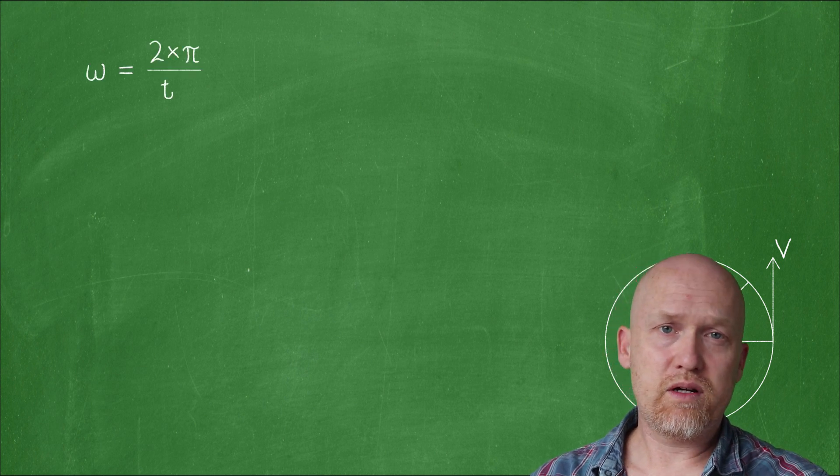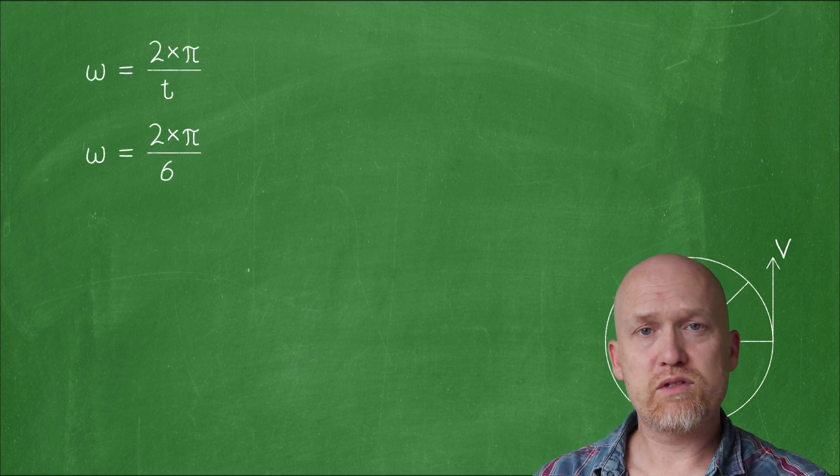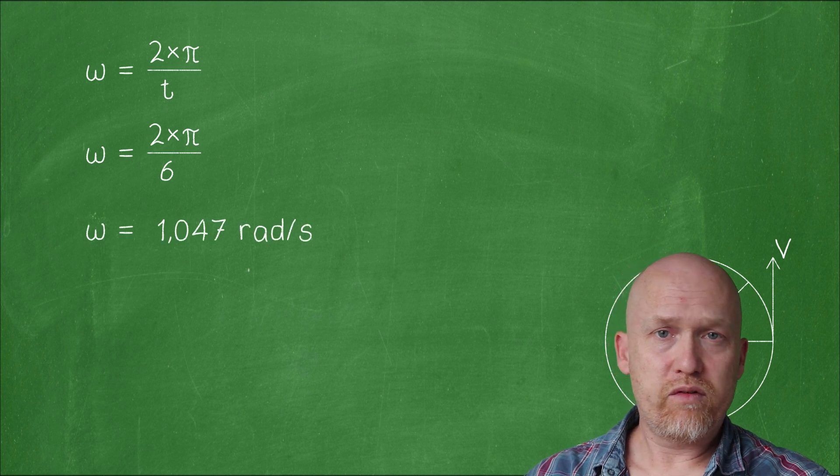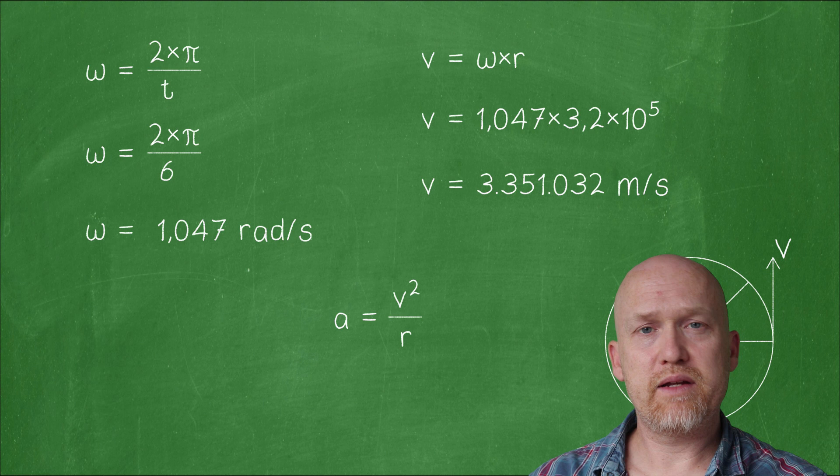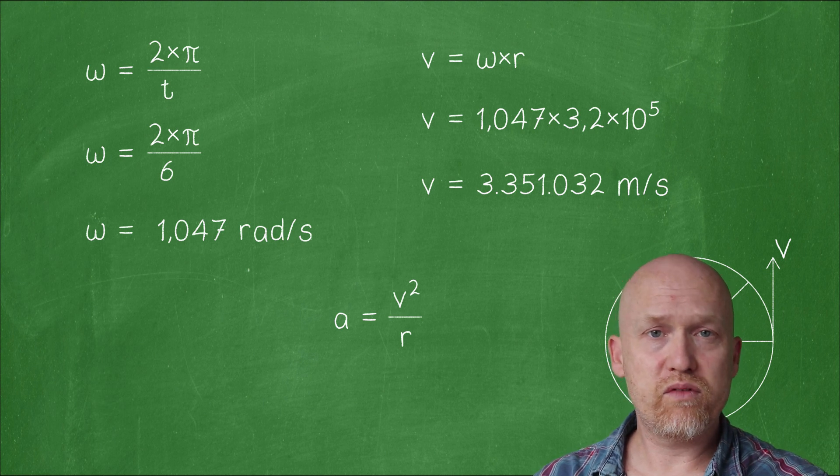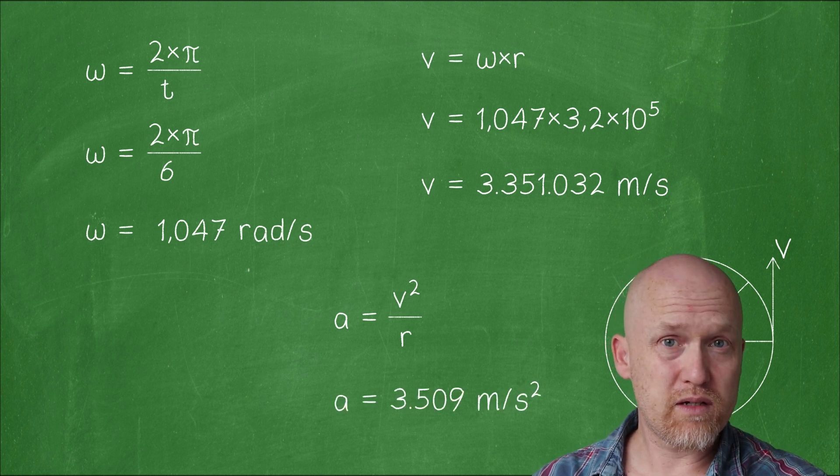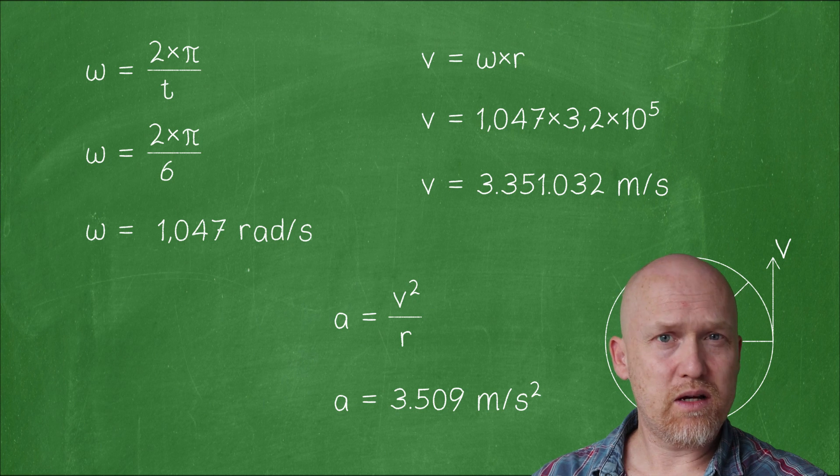The angular velocity is 2π over 6 seconds. The linear velocity is then ω times the radius. This results in an acceleration of 3.5 thousand meters per second squared. That's a lot. No wonder why these objects are flung off.